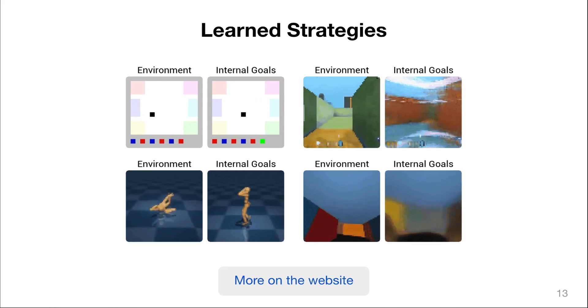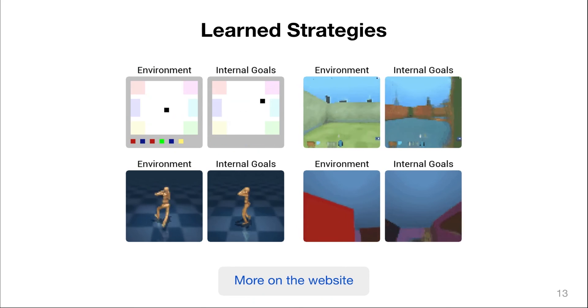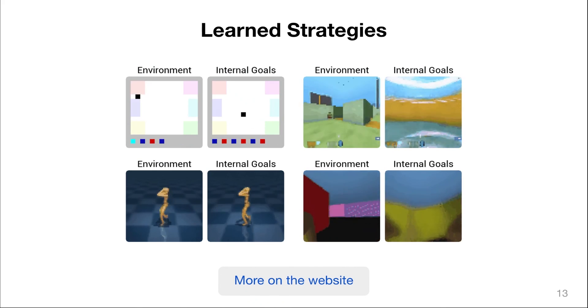On the egocentric Ant Maze benchmark in the bottom right, we can see that the manager steers the worker by targeting different wall colors throughout the maze and therefore steering through multiple checkpoints until it reaches the goal.